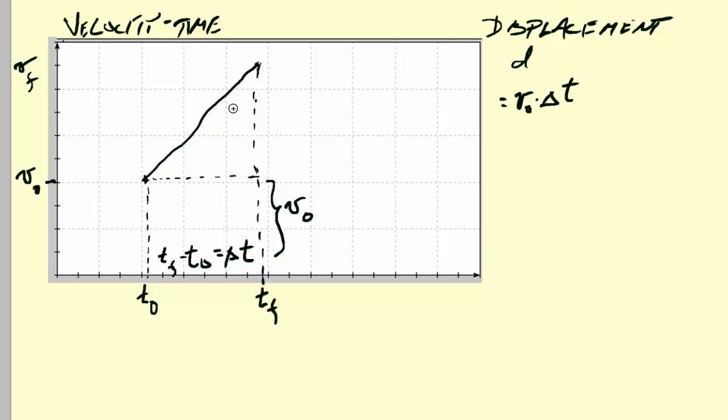The next part is the area of this triangle. We need this distance, which is VF minus V0, and we've already seen that before when we figured out acceleration. That's delta V, and this length is delta T, and the area of the triangle is one half of the base times the height. So it's one half of the base times the height. We usually write the delta V and then the delta T.